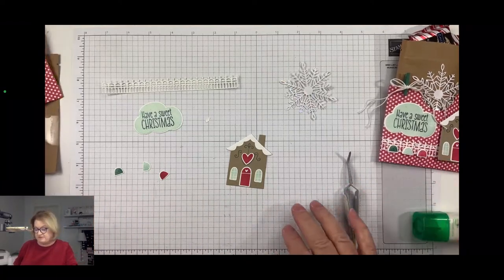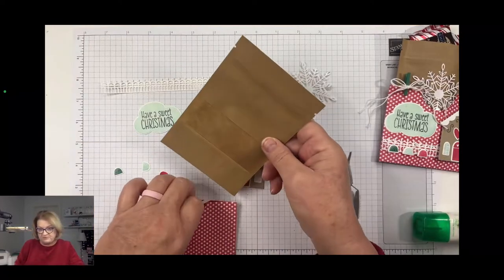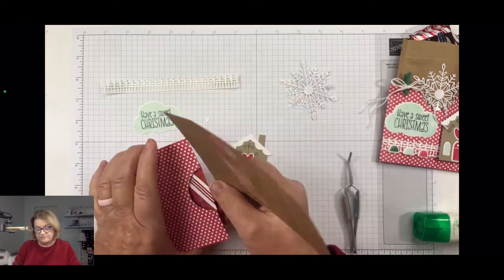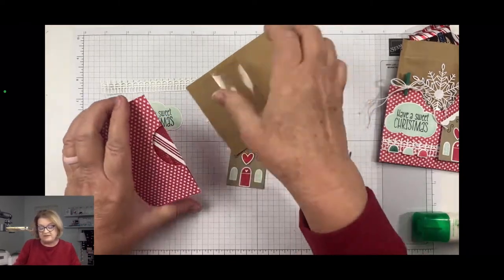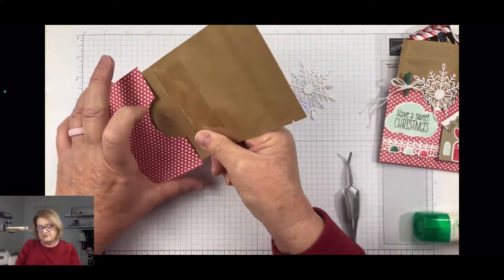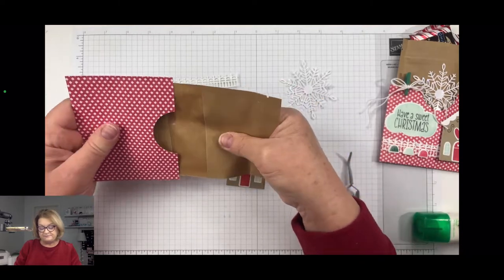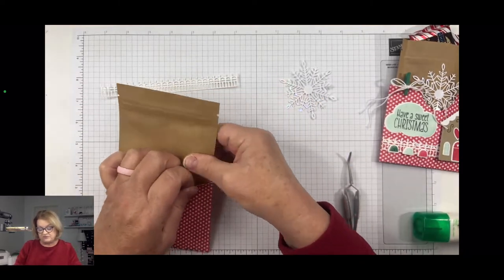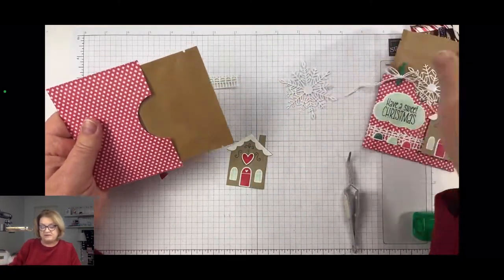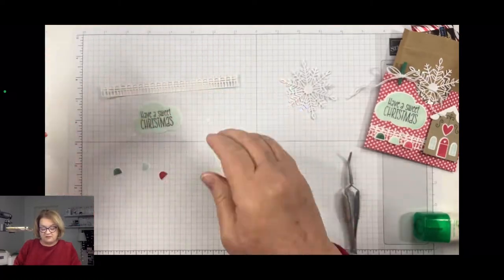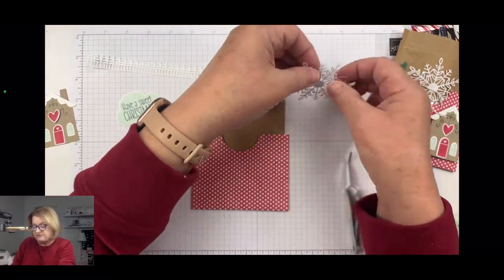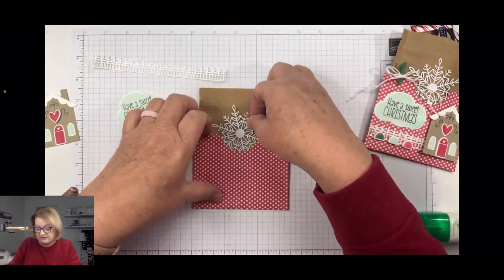All right, now we're going to put our pocket together. So I am going to go ahead and put my treat bag. I'm going to slide it right in this pocket. And like I said, it's going to be a tight fit. If you want it to be a little looser, you can make your pocket a little wider than the bag, but I wanted mine to be a very tight fit so that when I'm carrying it around, that pocket doesn't fall out.